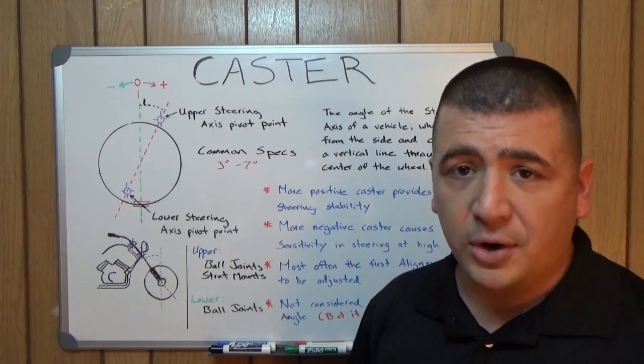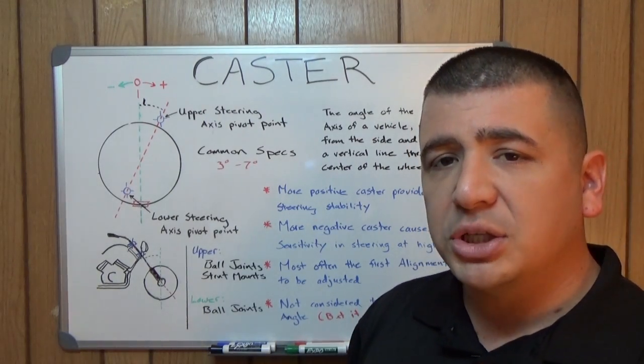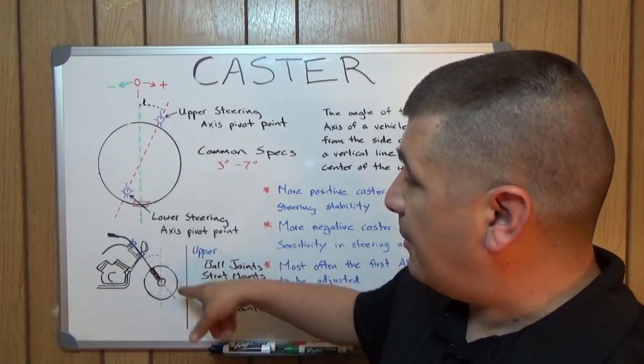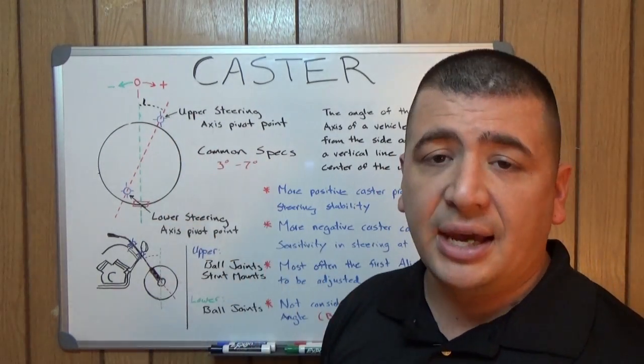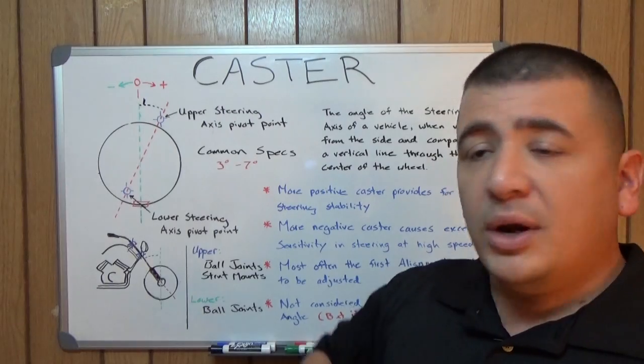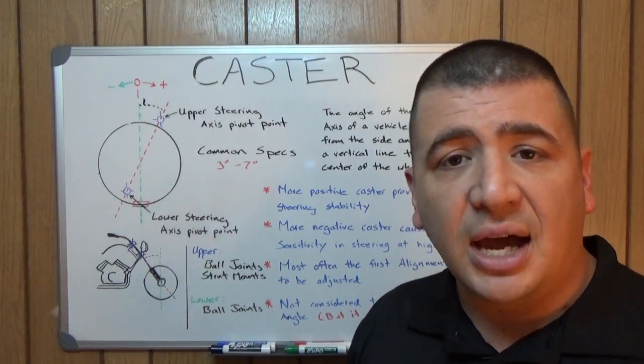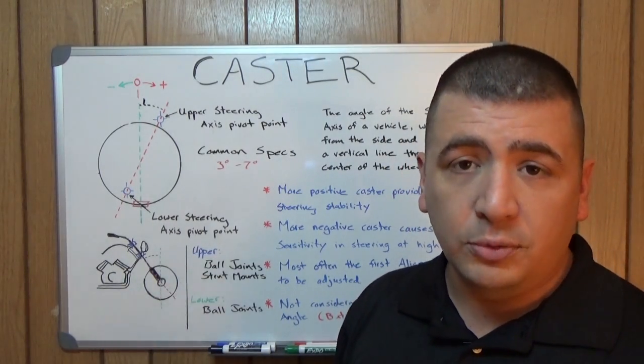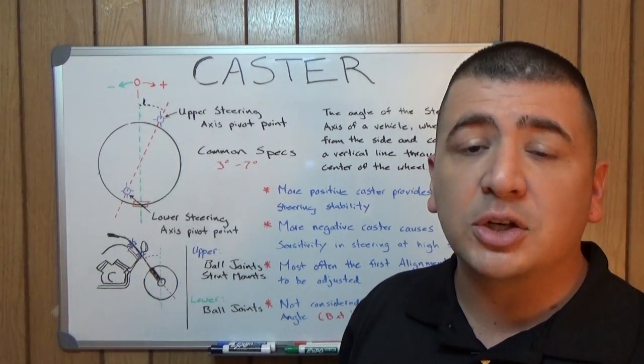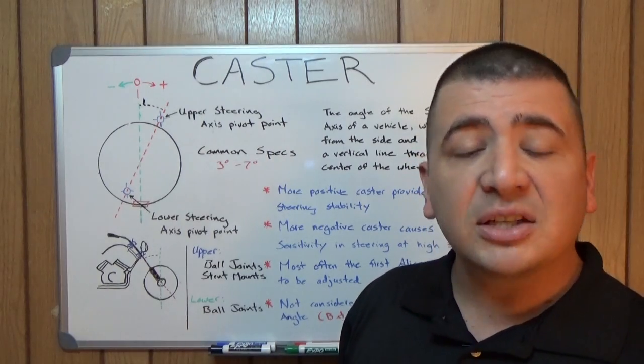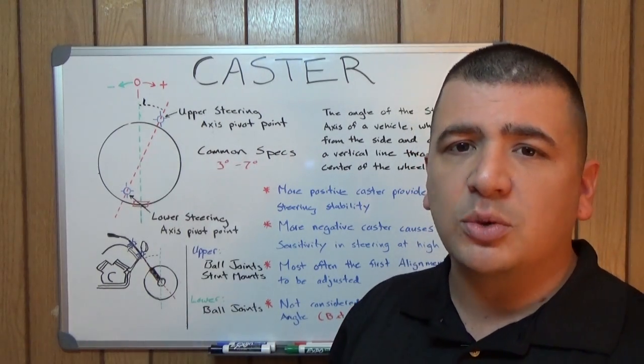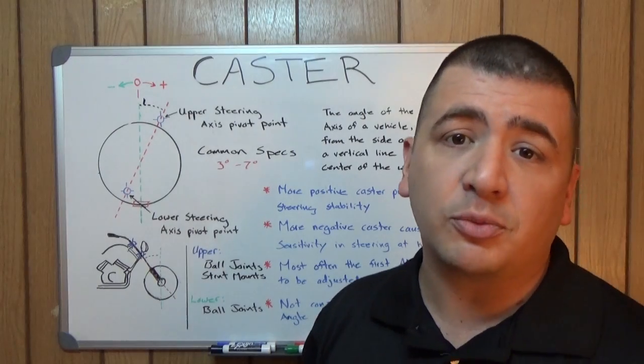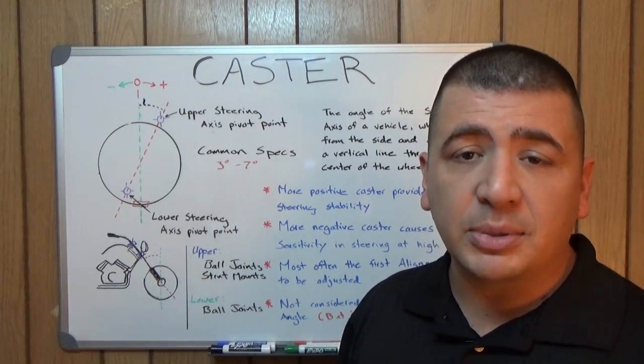So caster is also not considered to be a tire wear angle. However, there is one situation in which it could be a tire wear angle. When you look at something like a motorcycle, if a car were to have that much caster or excessively high caster compared to what it's supposed to have, whenever you turn that wheel, it's going to be rocking the tires up on the side. And that can cause excessive wear on the inside or outside shoulder of the tire.